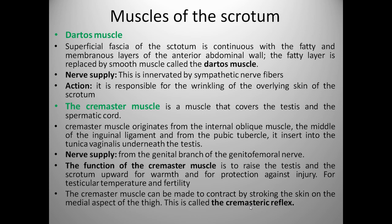Now we will see the cremaster muscle. It is the muscle that covers the testis and the spermatic cord. The cremaster muscle originates from the internal oblique muscle, the middle of the inguinal ligament, and from the pubic tubercle. It inserts into the tunica vaginalis underneath the testis. It is supplied by the genital branch of the genitofemoral nerve. The function of the cremaster muscle is to raise the testis and the scrotum, apart from warmth and protection against injury, for testicular temperature regulation and fertility. The cremaster muscle can be made to contract by stroking the skin on the medial aspect of the thigh. This is called the cremasteric reflex.